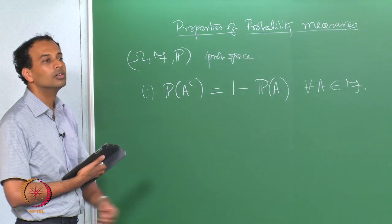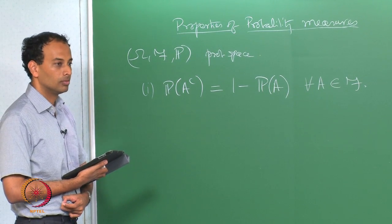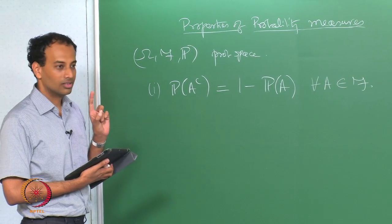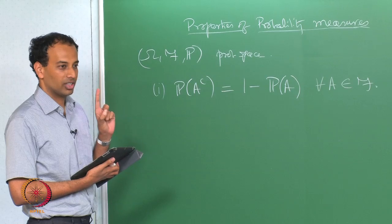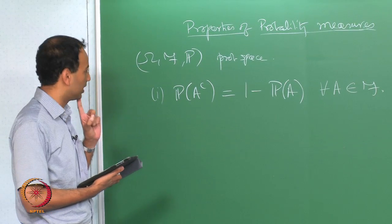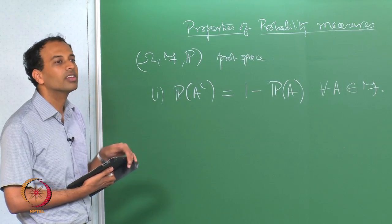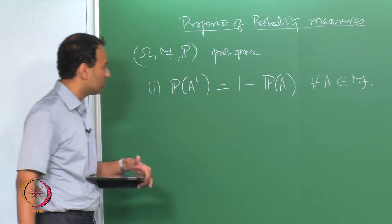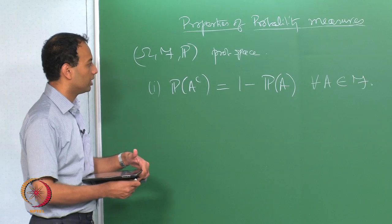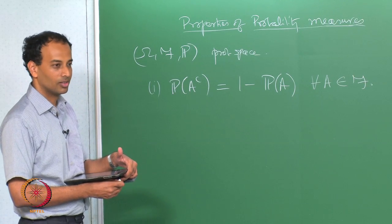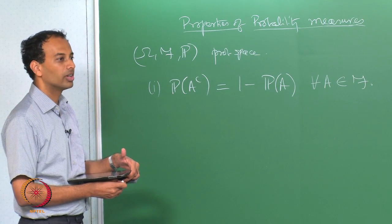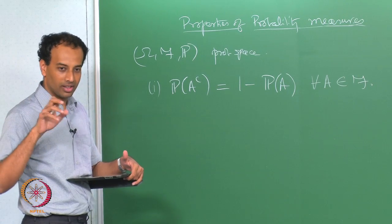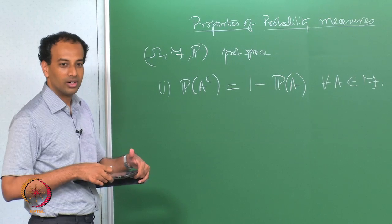How does this follow? How do you prove this? You have to use only the axioms. A and A complement are disjoint. A union A complement is Omega. So Omega equals A union A complement, and therefore the probability of Omega equals 1 equals the probability of A complement union A.